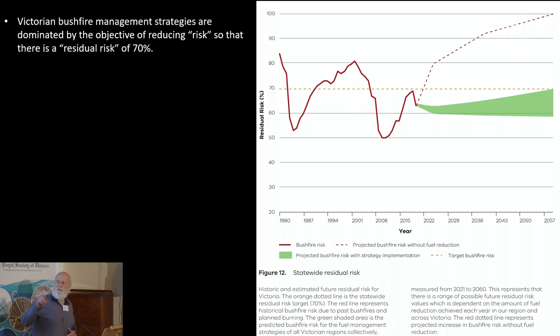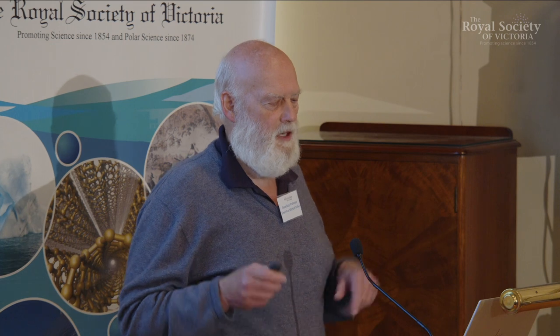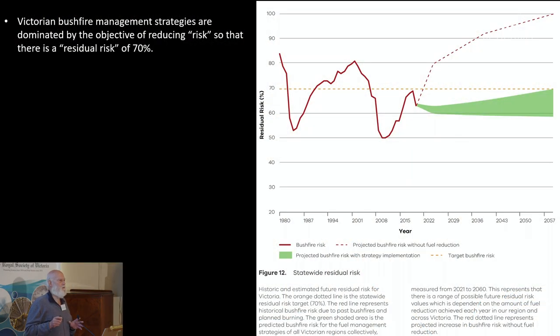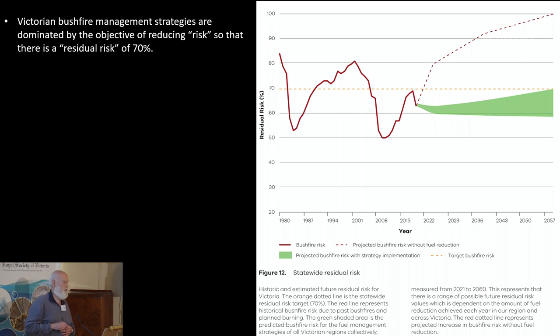According to this line that's appeared over the years, the strategy is to keep the risk below this 70% figure by burning or fuel reduction control — usually burning. And if you don't do it, then what's going to happen is the risk is going to follow that dashed line up to 100% again. Of course, with bushfires occurring, that'll never happen — but this is what the plan says.